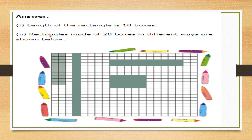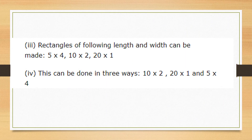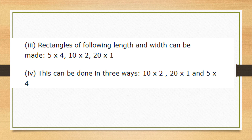The second question: color a rectangle made of 20 boxes in some other way. You can color 5 rows of 4 — since 5 fours are 20. This is 10×2 — 10 twos are 20. Turn to page number 94. Rectangles of length and width: 5×4, 10×2, and 20×1. In how many ways can you color a rectangle of 20 boxes? When you color them, write the length and width. There are only 3 ways to color a rectangle of 20 boxes.